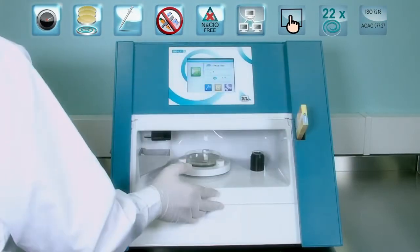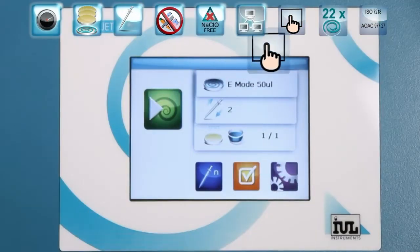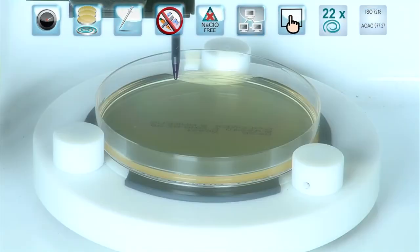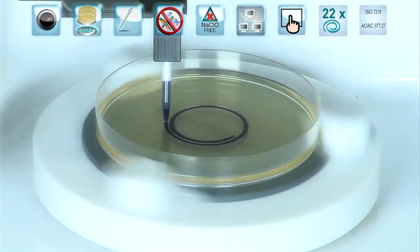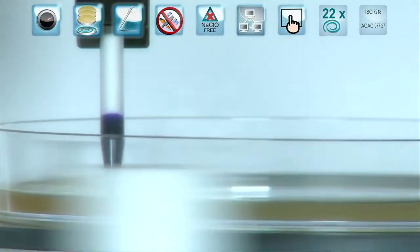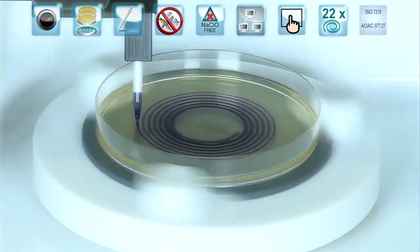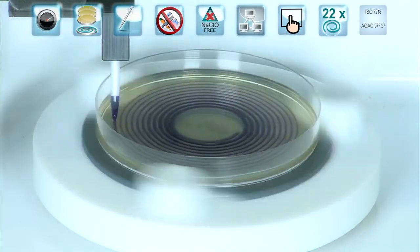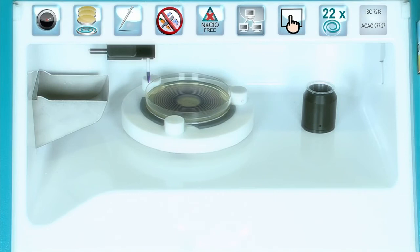EDIJED2's streamlined intuitive software is commanded from a color touch panel. IUL also improved spread times in this device. EDIJED2 stands out as the spiral plater with the widest range of spiral distributions, making up to 22 of the most used distributions.